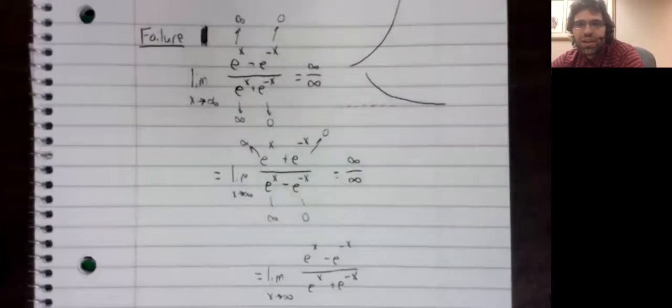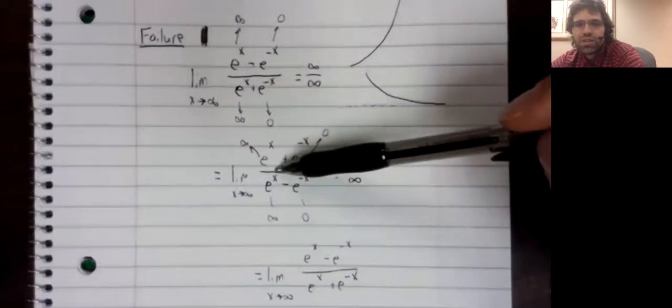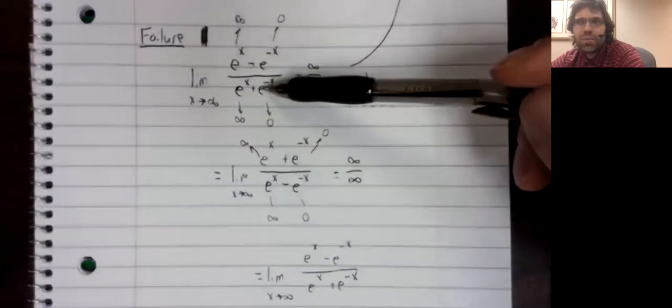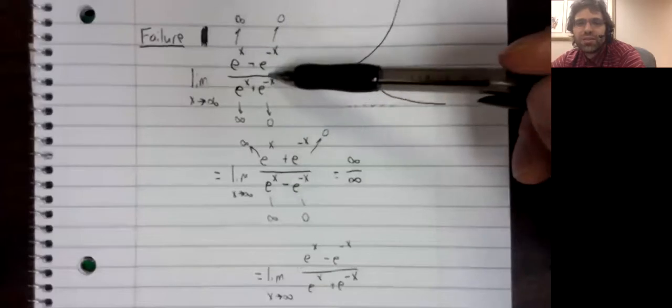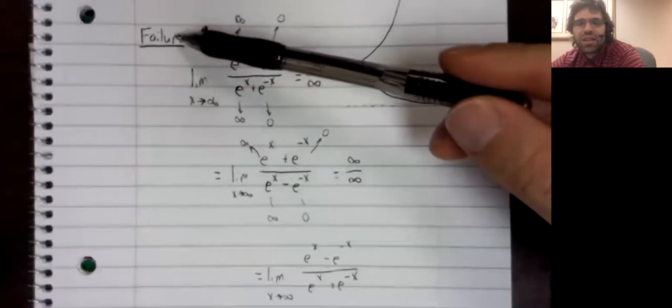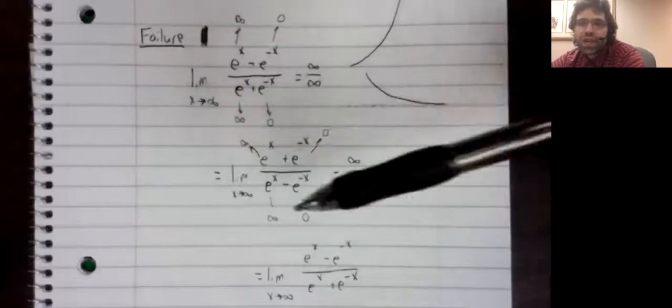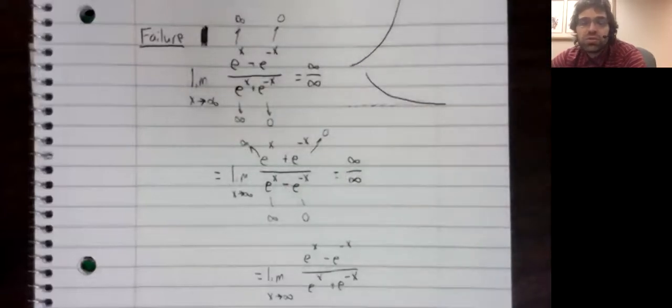So, L'Hôpital's rule says that this limit equals this limit equals this limit. It hasn't failed in the sense that it's telling us an untrue thing, but it has failed to be useful.